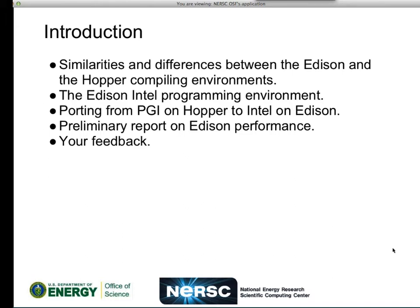Here's going to be the basic structure of the talk. I'm going to talk mostly about the differences — who cares about the similarities — between Edison and the compiling environment as it impacts a programmer and a code runner, since that's what my experience has been. Then I'll talk in more detail about the Edison Intel programming environment, which is quite different from the way it is on Hopper and from the other two. I'll talk about porting from PGI on Hopper to Intel on Edison, since PGI is going to be gone, and I'll talk about some performance I got on the various benchmarks that I run on the system.